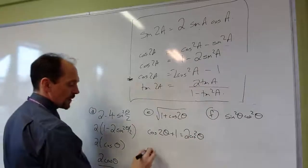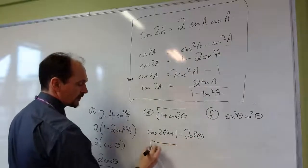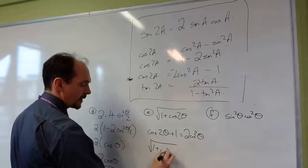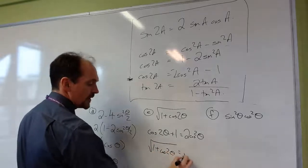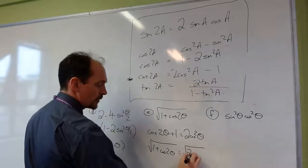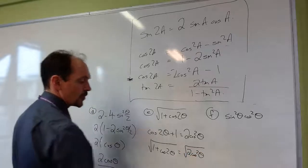If I square root both sides, I can say the square root of 1 plus cos 2 theta equals the square root of 2 cos squared theta.